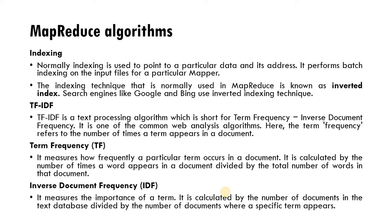The third algorithm is indexing. Indexing is used to point to a particular piece of data and its address. It performs batch indexing on input files for a particular mapper. The indexing technique normally used in MapReduce is known as inverted index — search engines like Google and Bing use inverted indexing. Indexing means providing a unique index number to data, which is very useful for searching. The technique used in MapReduce is the inverted index, used by Google and Bing for searching tasks.